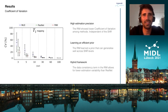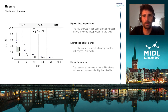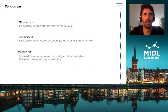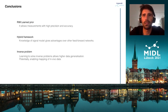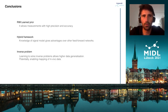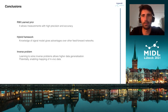This indicates that we learned an efficient prior that can generalize well for different noise levels. I showed you a new method for T1 mapping based on the recurrent inference machines. The prior learned by the RIM enables higher estimation precision without compromising accuracy, and our results suggest that the RIM is a promising technique for quantitative MRI.